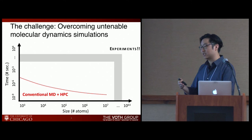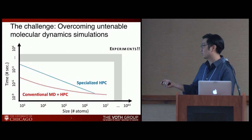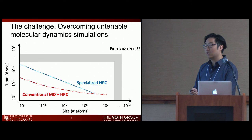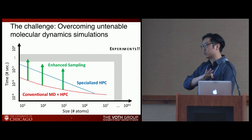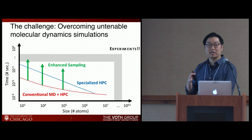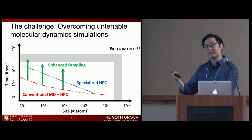There are specialized HPC systems such as the Anton computers that can push this envelope further. Another approach is enhanced sampling techniques used alongside conventional MD. The goal is to sample rare events we wouldn't typically see. If we run a conventional MD simulation and see an event once in a typical trajectory, with enhanced sampling we may see it a hundred or a thousand times in the same timeframe, hopefully obtaining statistically meaningful results.